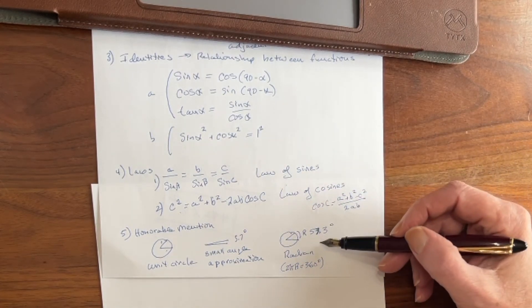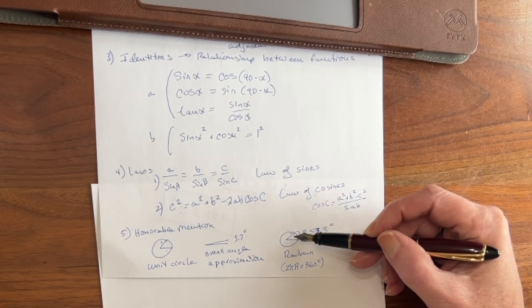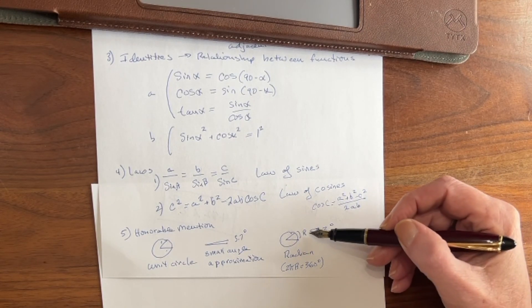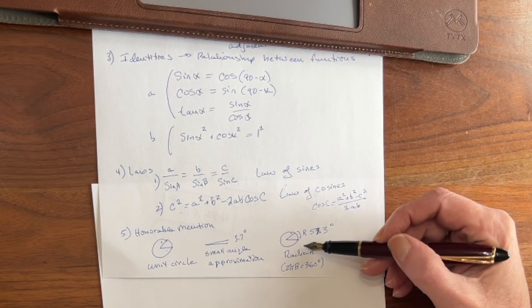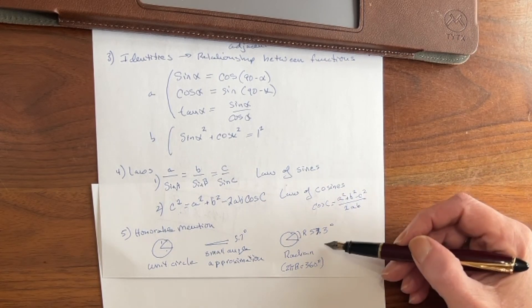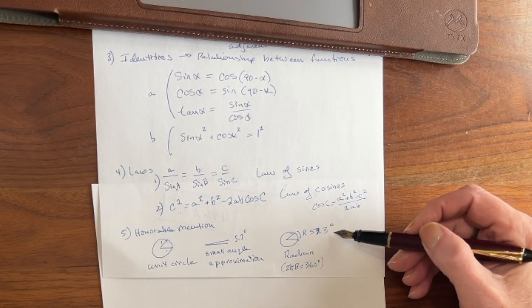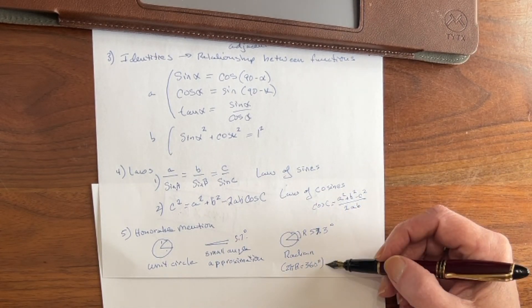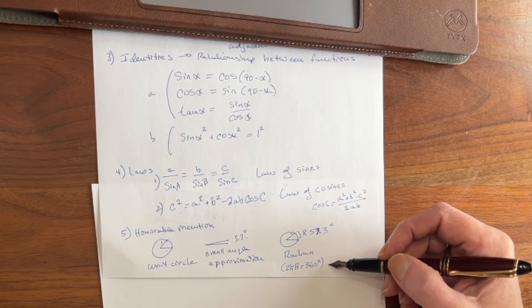And finally, we have something called a radian. A radian is an angle that carves off a portion of the circumference equal to the radius. So this segment right here equals the radius. And a radian is 57.3 degrees, about 10 times the small angle. And there are 360 degrees in two pi radians.